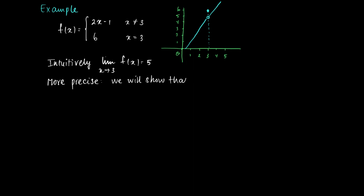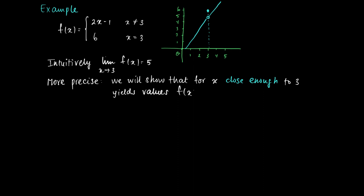We will see that by closing in on 3 from the right, the values of f decrease to 5, and from the left-hand side, if we move up to 3, the function values are increasing to 5. We will show that for x close enough to 3, this yields values f(x) close enough to 5. What 'close enough' means will be made precise later.